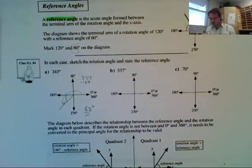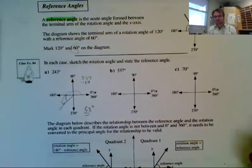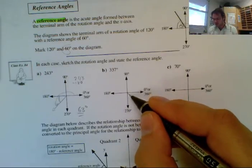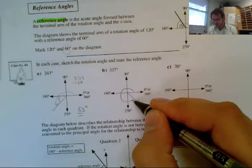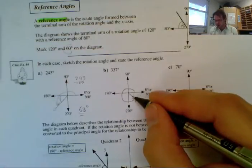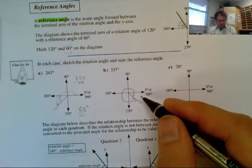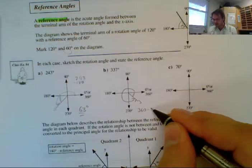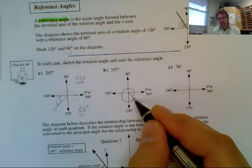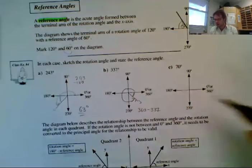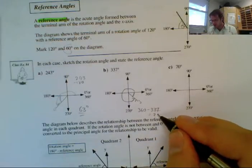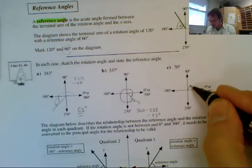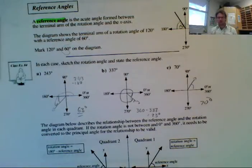Let's take a look at the next one — we're looking at 337 degrees. So 337 is in between 270 and 360, so it's going to be somewhere in here. To find my reference angle, I'm going to go 360 minus 337 — because I'm almost at 360 and I want to figure out what I'm short. That gives me 23 degrees. Now my next one, we're looking at 70. So 70 is right there — my reference angle is just going to be 70 degrees. That one's pretty simple.